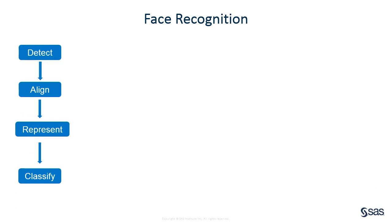The term face recognition is quite a general term. One official definition is a biometric system used to identify or verify a person from digital images. The system is usually a pipeline of four stages: detect, align, represent, and classify.